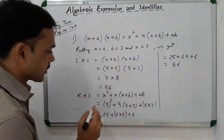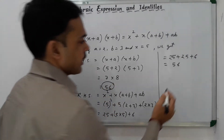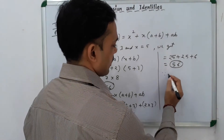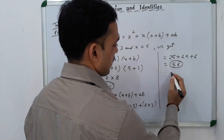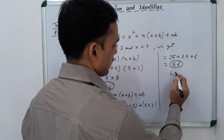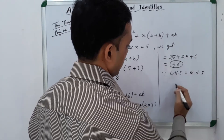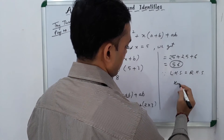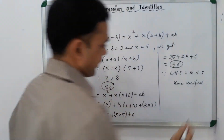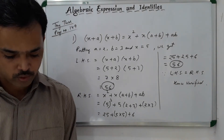We observe that LHS also gives 56 and RHS also gives 56. Since LHS equals RHS, hence verified. I hope that question number 1 is clear to you all.